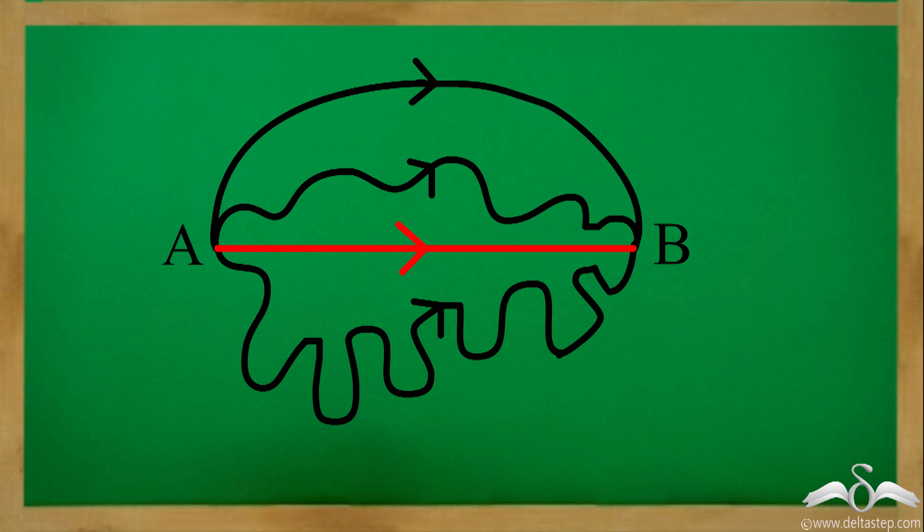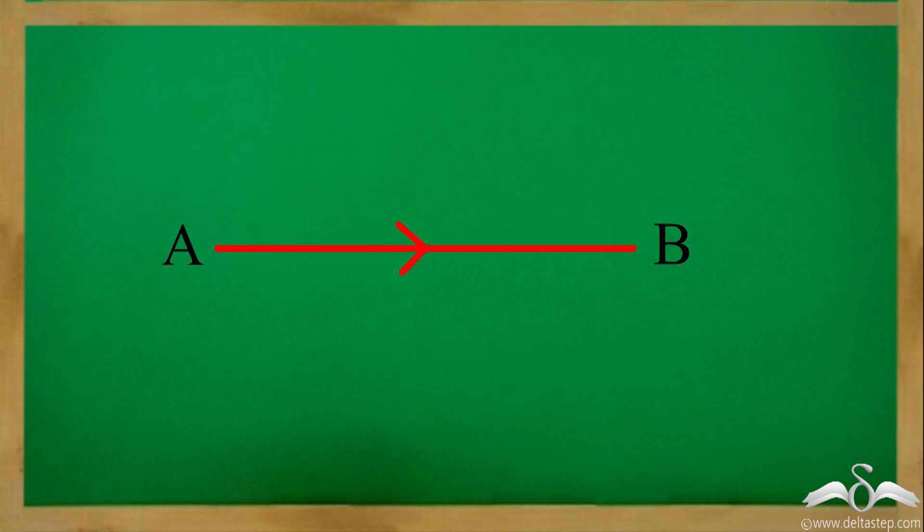Are they all line segments? No, the shortest route that is the straight line joining points A and B is called the line segment. It is represented as this.